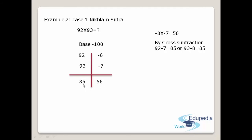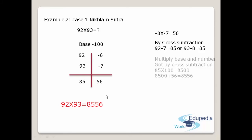You can club these two numbers — 85 and 56 — so the answer when you multiply 92 and 93 is 8556. To verify: multiply the cross subtraction answer with the base — 85 into 100 gives 8500 — and add 56 to that: 8500 plus 56 equals 8556. Therefore the answer for multiplication of 92 and 93 is 8556.